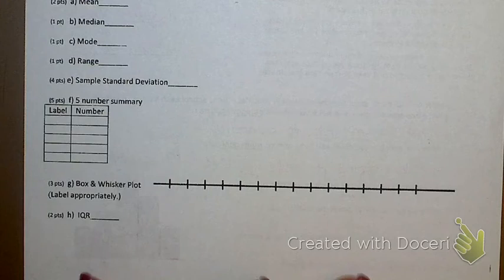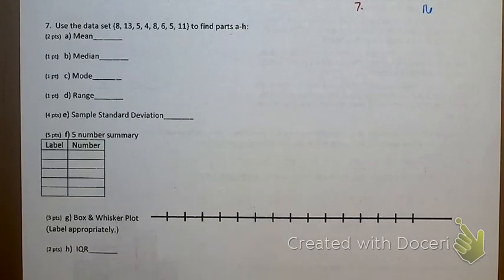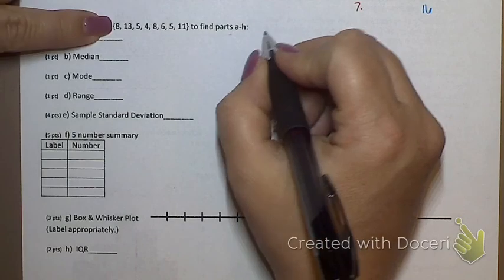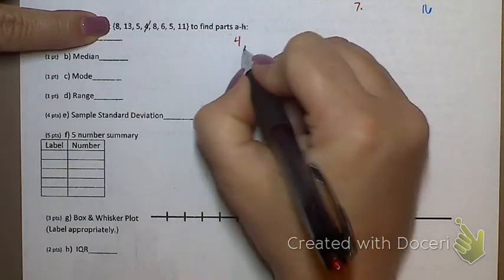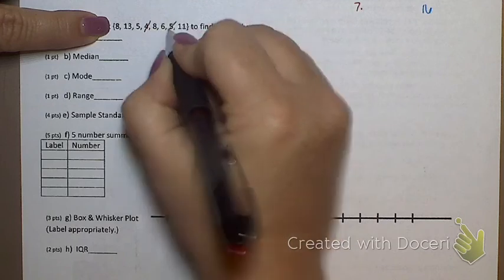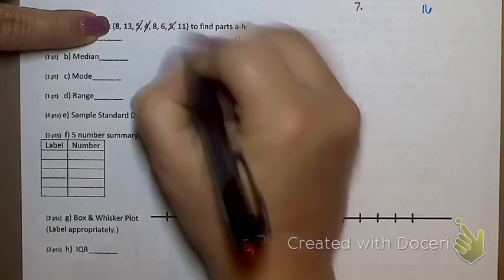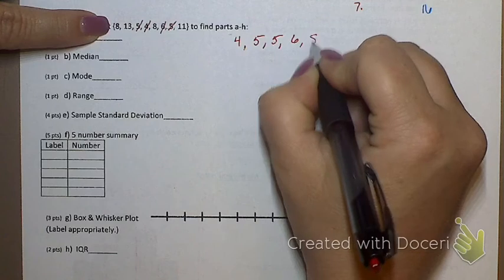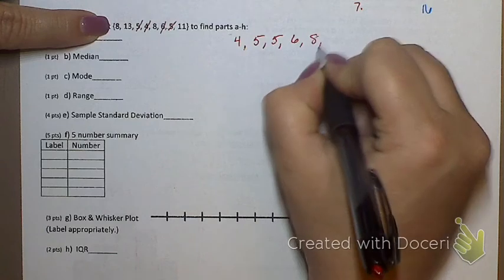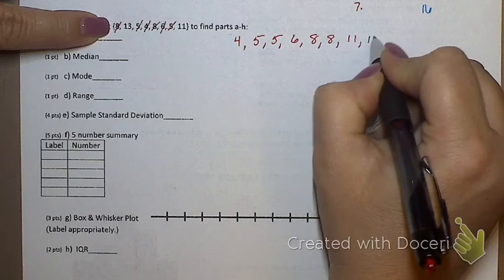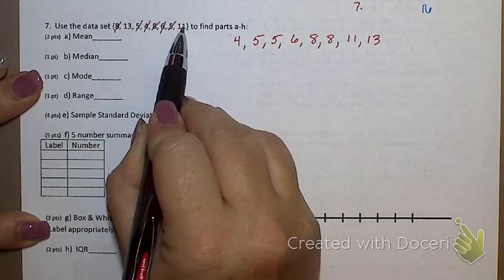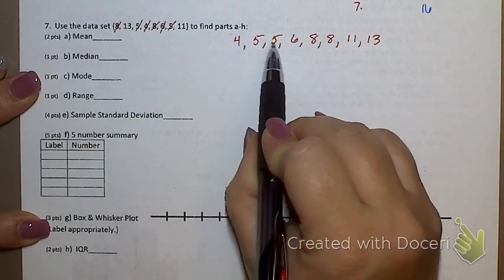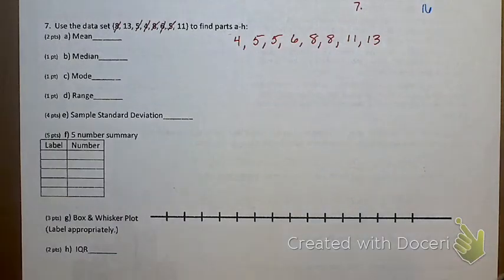The last chunk of problems. Use the data set to find parts A through H. I'm going to start off by writing these all in order. What's the smallest number on my list? 4. And then what? 5, 5. And then 6. And then 8, 8. And then 11 and 13. Now I always go back and double check. 1, 2, 3, 4, 5, 6, 7, 8 numbers on the list. 1, 2, 3, 4, 5, 6, 7, and I have 8 numbers listed. So that's good. I didn't forget any.